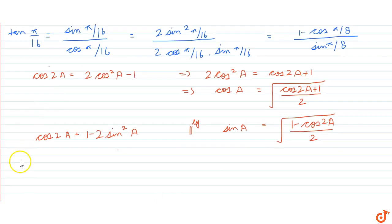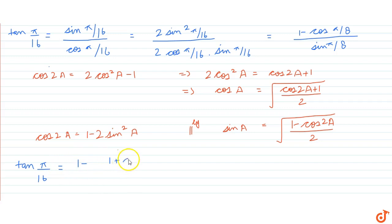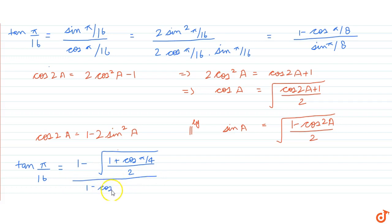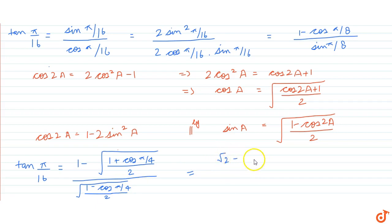Now using these formulas, tan(π/16) equals 1 minus the square root of (1 plus cos(π/4)) divided by 2, all divided by the square root of (1 minus cos(π/4)) divided by 2. This can be written with cos(π/4) equal to 1 over root 2.